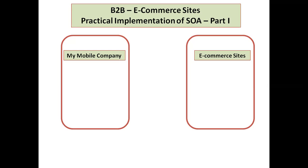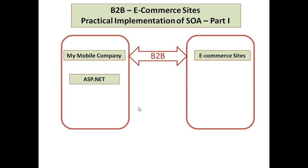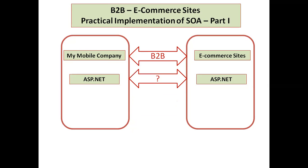Whenever my mobile company wants to do business with different e-commerce sites, suppose I have developed the website. My mobile company developed the website in ASP.NET, and my assumption is the e-commerce site uses a .NET site for consuming the services. My mobile company is having their website developed in ASP.NET, but they are not directly sharing the resources with any other e-commerce site. So how does secured communication take place? In that case I am using the service oriented architecture.